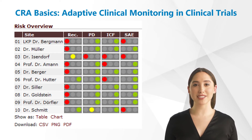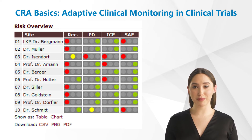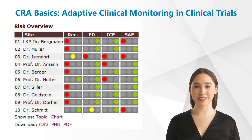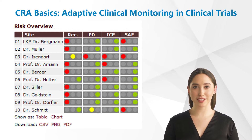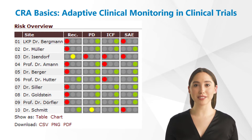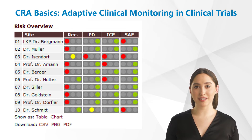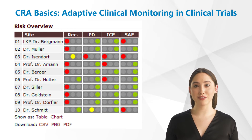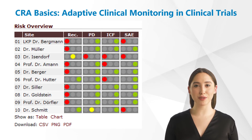The first column represents recruitment. Although it is red almost everywhere here because recruitment is not going as well as expected, this does not represent a risk for study quality, but for adherence to timelines, which is why this factor is not taken as a key risk factor. In our example, site 3 has a red light in all three key risk factors and should therefore be visited more often than sites that have fewer or no red lights.